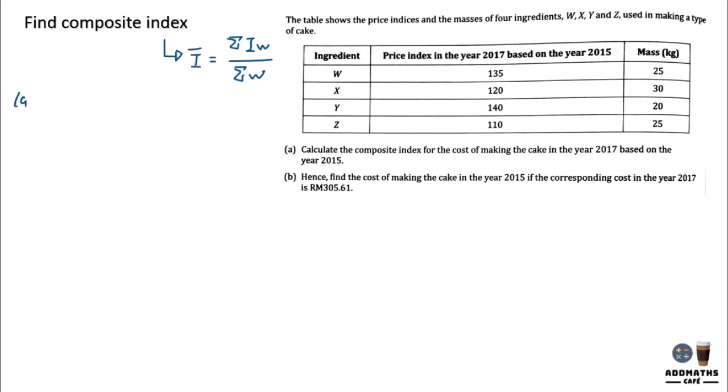You are required to calculate a composite index. So this is the formula, the composite index. So I have 135 times the weightage, all these are the weightage.